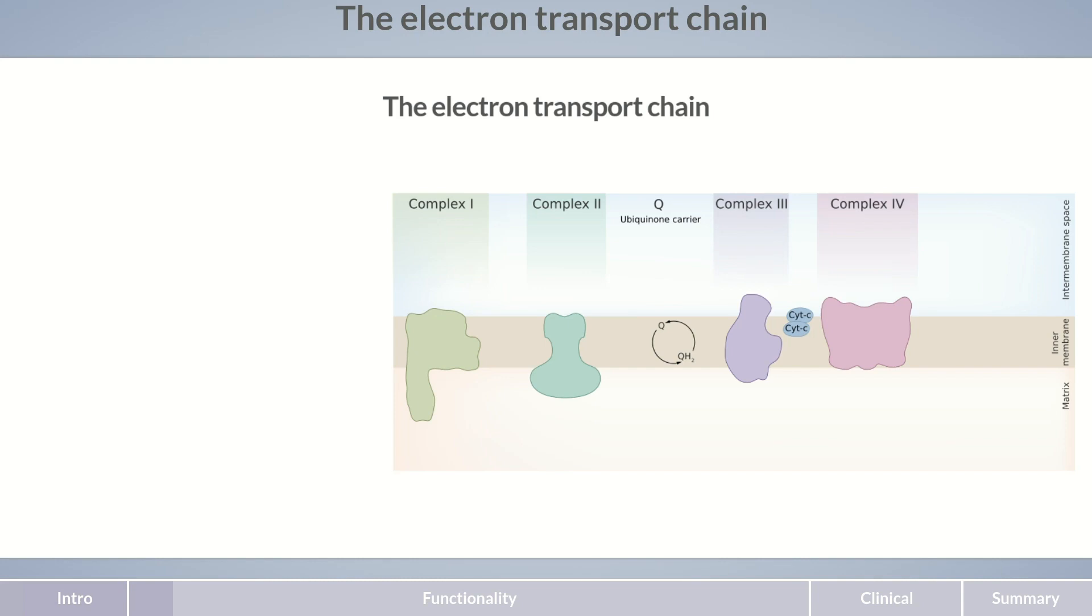By the way, we've already introduced complex 2 in the citric acid cycle as succinate dehydrogenase. There, the enzyme converts succinate to fumarate and transfers two electrons and protons to FAD, and therefore, to the respiratory chain.